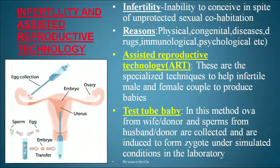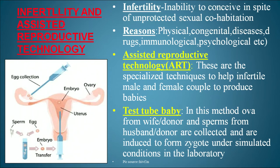Infertility is the inability to conceive despite unprotected sexual cohabitation. Those who exhibit infertility are called infertile couples. The reasons behind infertility may be physical, congenital, drug-related, immunological, or psychological. To cope with infertility, we have assisted reproductive technology (ART) — specialized techniques to help infertile couples produce babies.